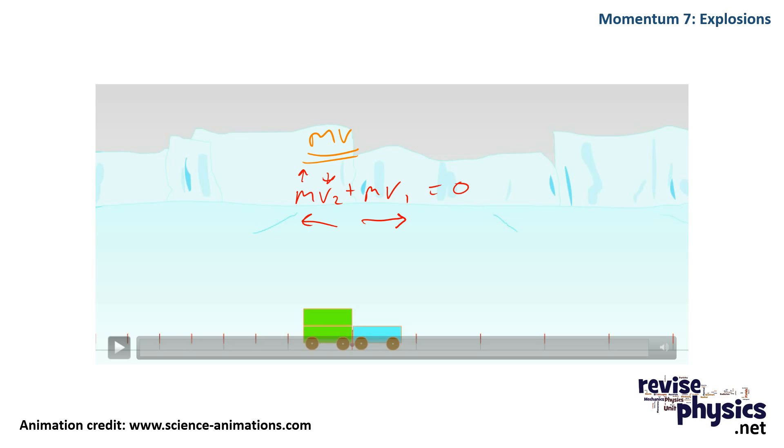Remembering, of course, in this direction, technically it's negative. So when they separate, v1 is twice v2.